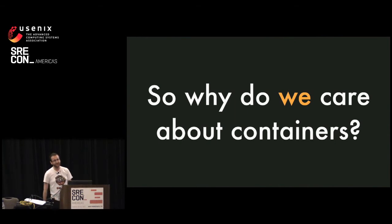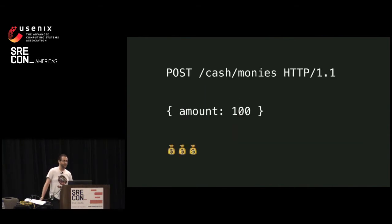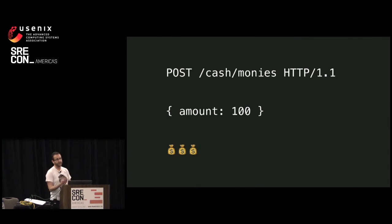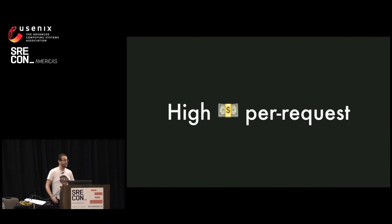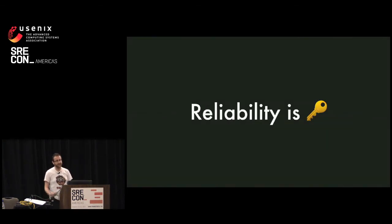So why would we even care about containers? Let's start by looking at what we are. We're a payments API. Merchants make requests like this — POST to cash monies, amount 100. We take money out of their customer's account, transfer it to them, and everyone's happy. Because of what we are, we have a relatively high value on each request. Any failed request can cause the merchant to lose a customer, particularly if it was part of a checkout flow. Merchants tend to just expect payments to work — it's kind of like electricity or plumbing. So for us, reliability is key.